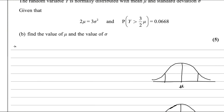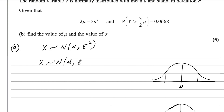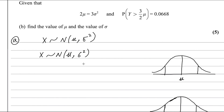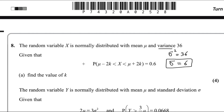For the first part, X is normally distributed with mean mu — the notation is X ~ N(mu, sigma squared), where sigma is 6, so sigma squared is 36. The bell curve helps us solve questions related to normal distribution. For random variable X, the value lies between mu minus 2k on the left side and mu plus 2k on the right side.